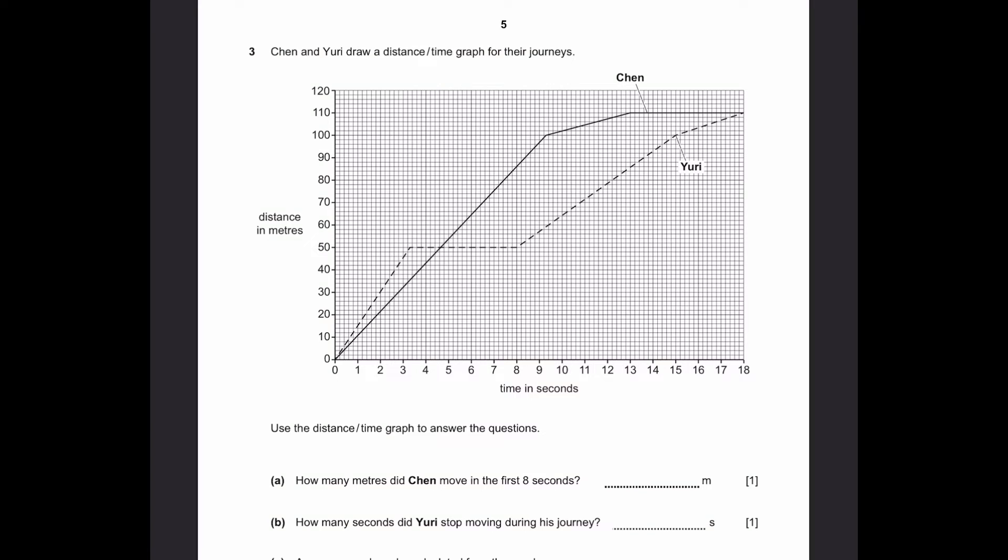Number three. Chen and Yuri draw a distance-time graph for their journeys. So we have distance in meters over here and we have time in seconds. Use the distance-time graph to answer the questions. Part A: How many meters did Chen move in the first eight seconds? So what we need to do is draw a line from time in seconds, eight seconds, up here. And when we line it up, we can see it lines up with 86 meters. That's the answer.